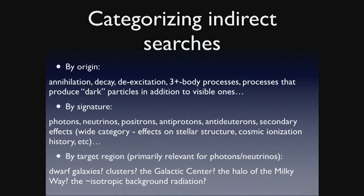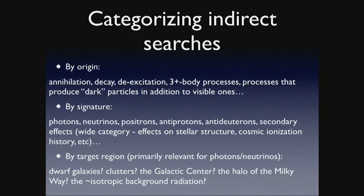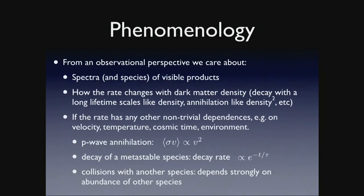If you're looking in particular at photons and neutrinos, those particles travel in straight lines. So we can pick a particular target region: galaxy clusters like the bullet cluster, toward the center of our galaxy where if there's an NFW-like cusp you expect a very large signal, the dwarf satellite galaxies of the Milky Way which appear extremely rich in dark matter, or the isotropic background radiation to search for signatures of dark matter annihilation or decay occurring throughout all of cosmic time.